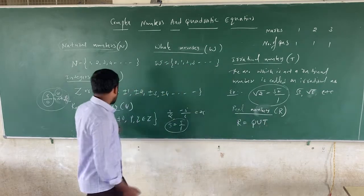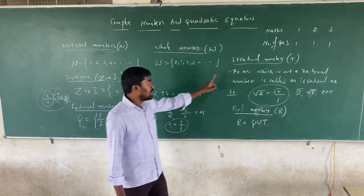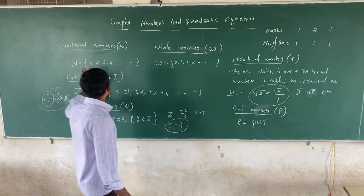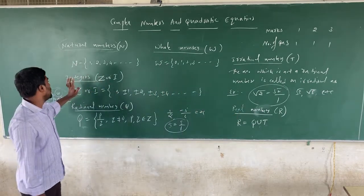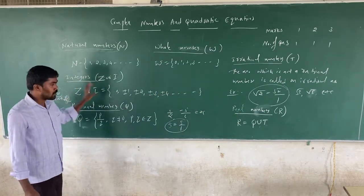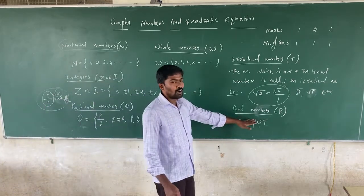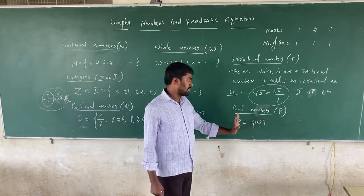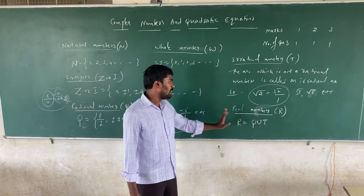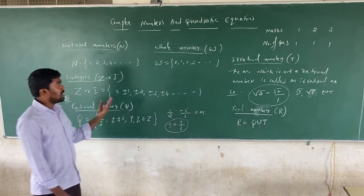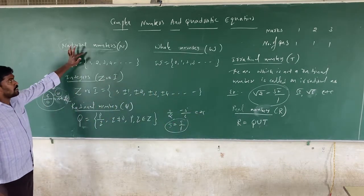So real numbers are the union of rationals and irrationals. Any number — natural number, integer, rational, or irrational — is a real number. This is about the number system.